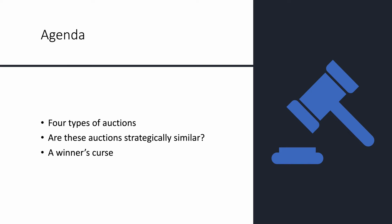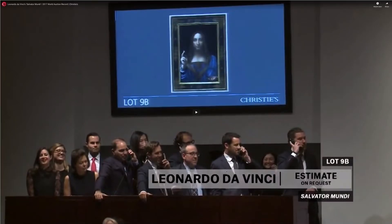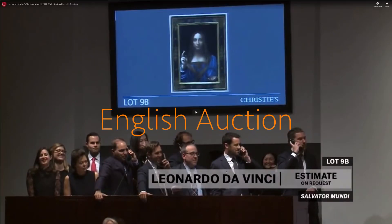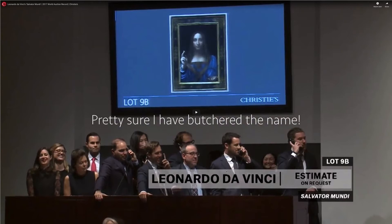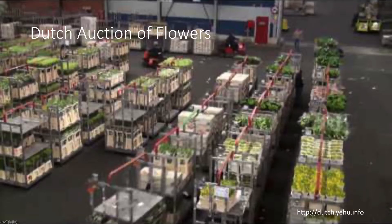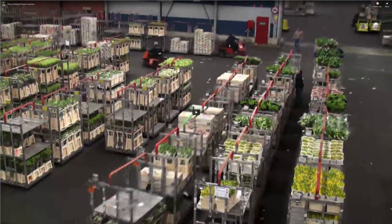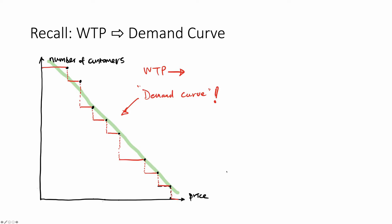To start, let's watch a couple of YouTube videos. The first video is the auction of the famous Leonardo da Vinci painting, Salvator Mundi, Savior of the World. The second video is an introduction of a specific auction format widely used in sales of fresh flowers in the Netherlands, named after the country — it's called a Dutch auction. Now you have watched the videos.